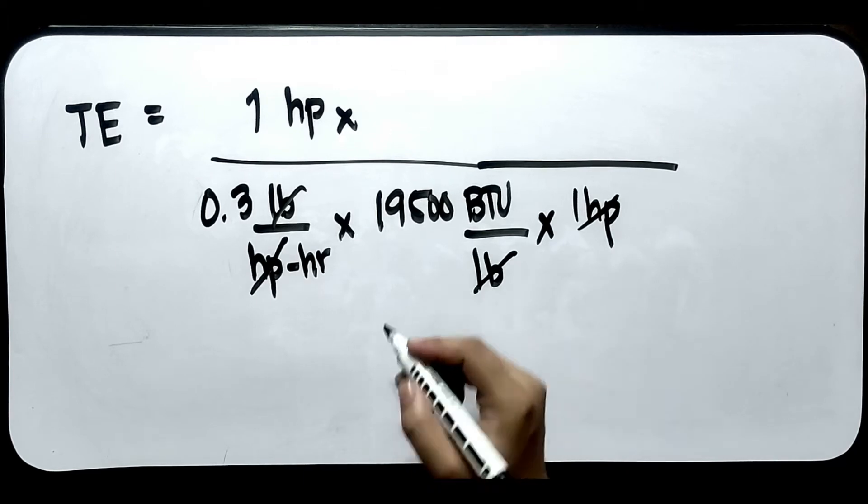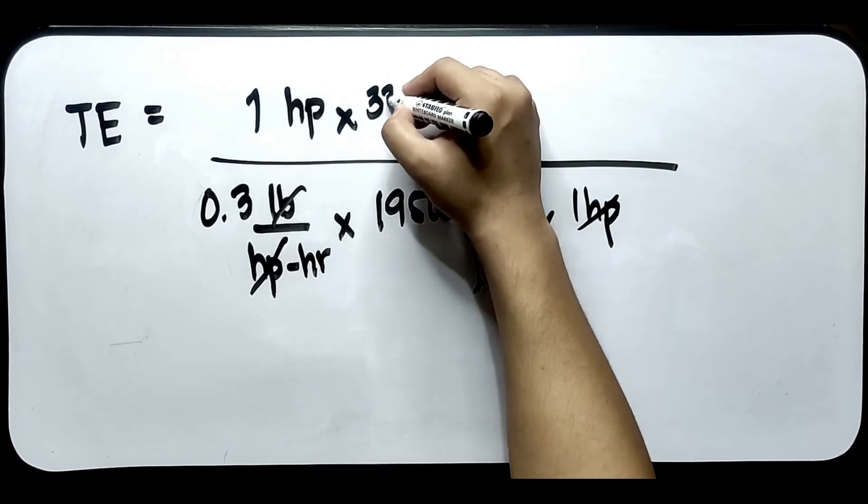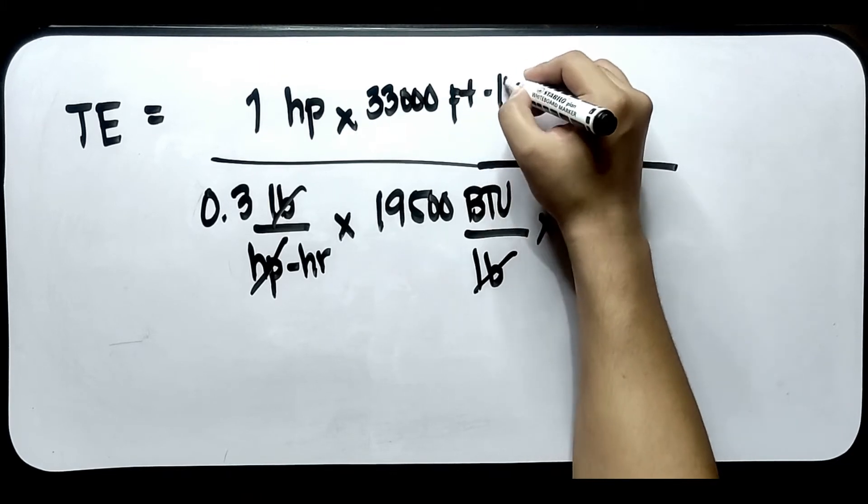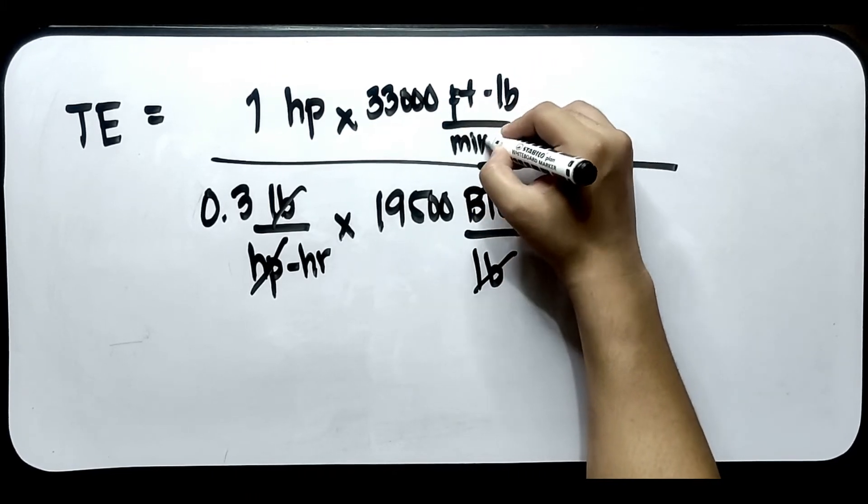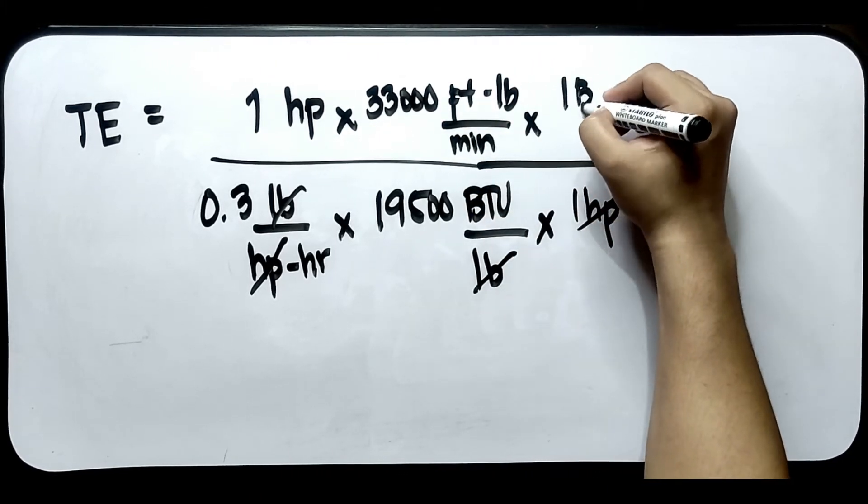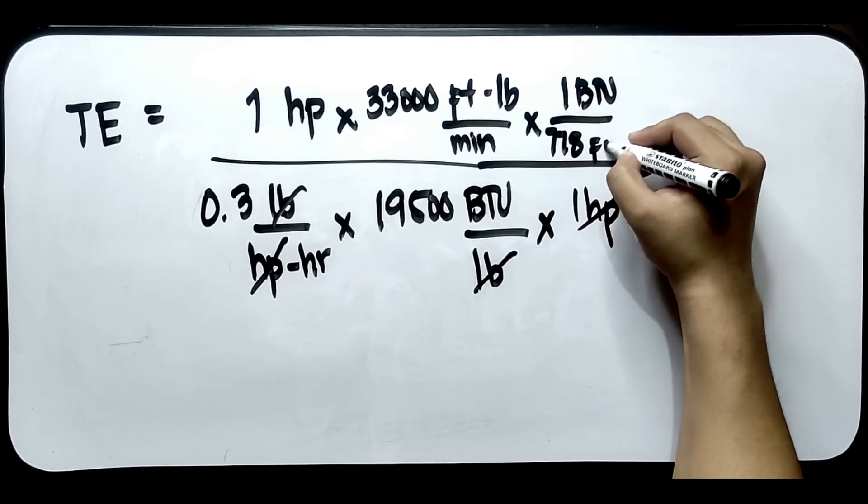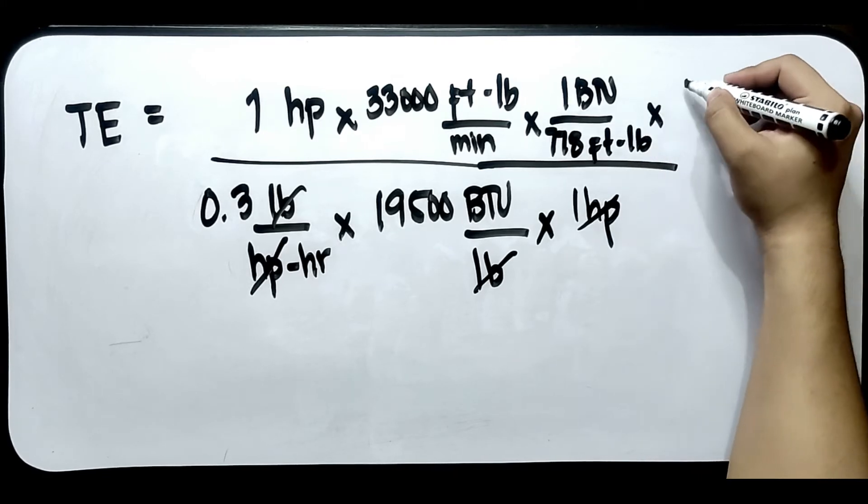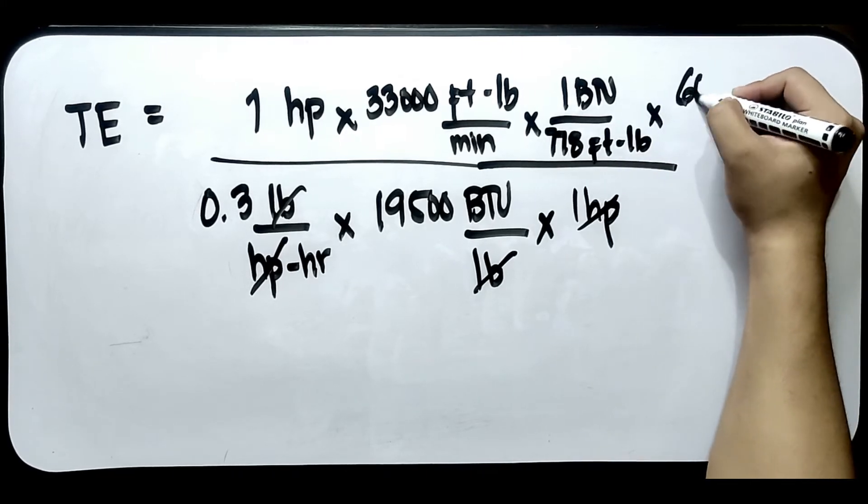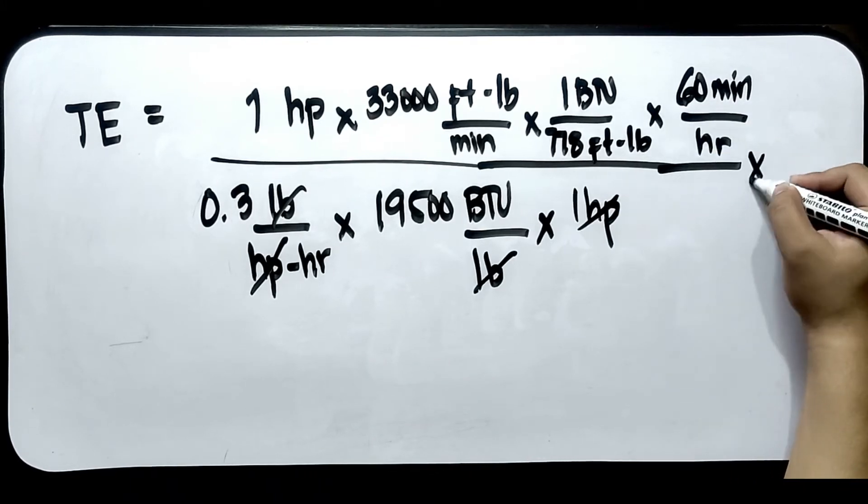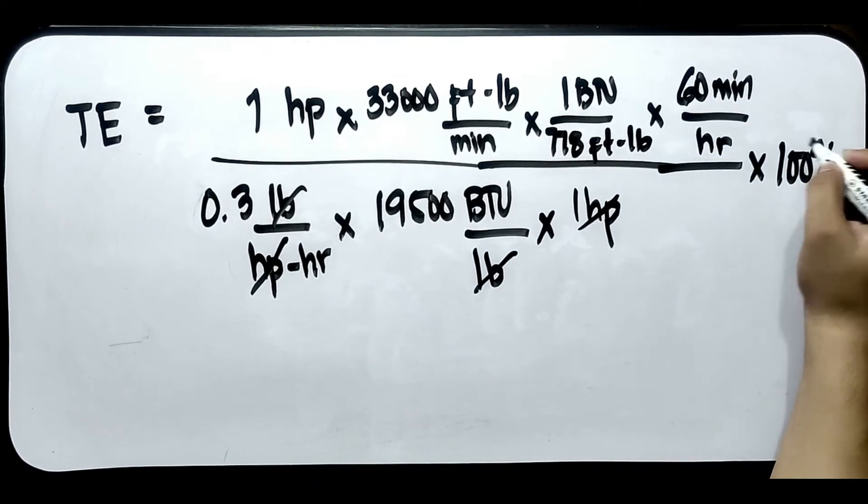Kailangan magkaroon tayong BTU per hour. So, multiply natin ito by 33,000 foot pound per minute, times 1 BTU is 778 foot pound, times 60 minutes ay 1 hour, times 100%.